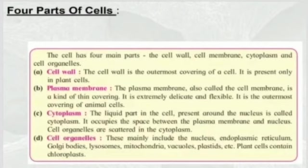Cell organelles mainly include the nucleus, endoplasmic reticulum, golgi bodies, lysosomes, mitochondria, vacuole, plastids, etc. Plant cells also contain chloroplasts.